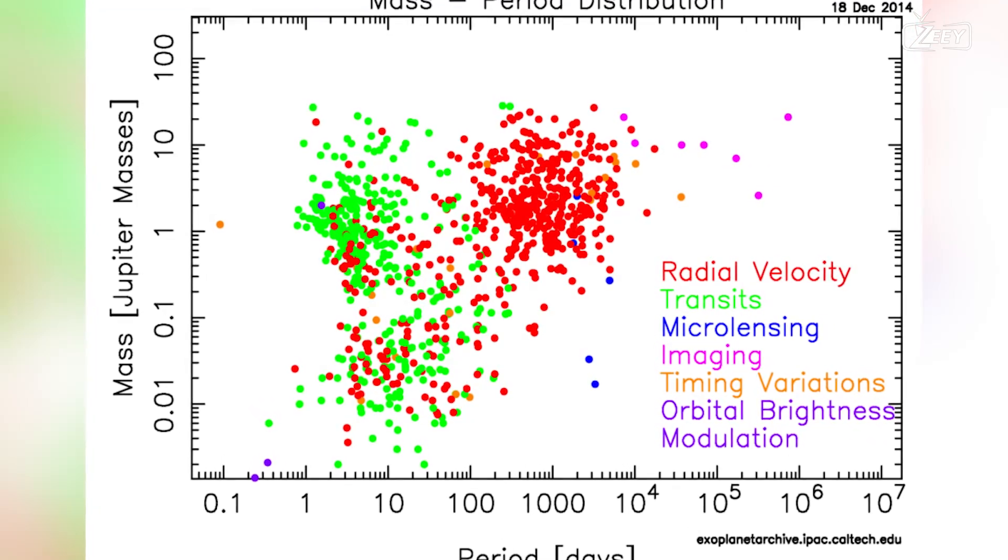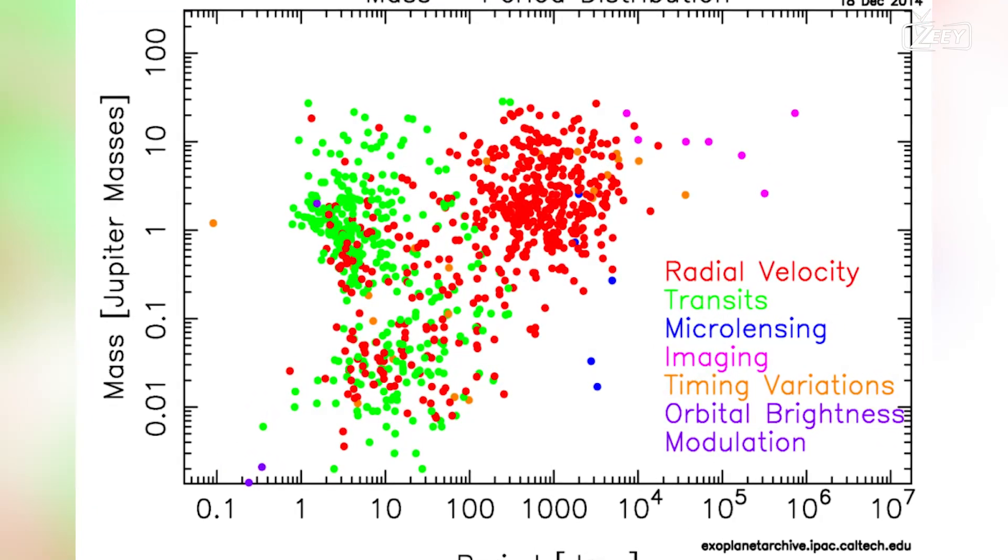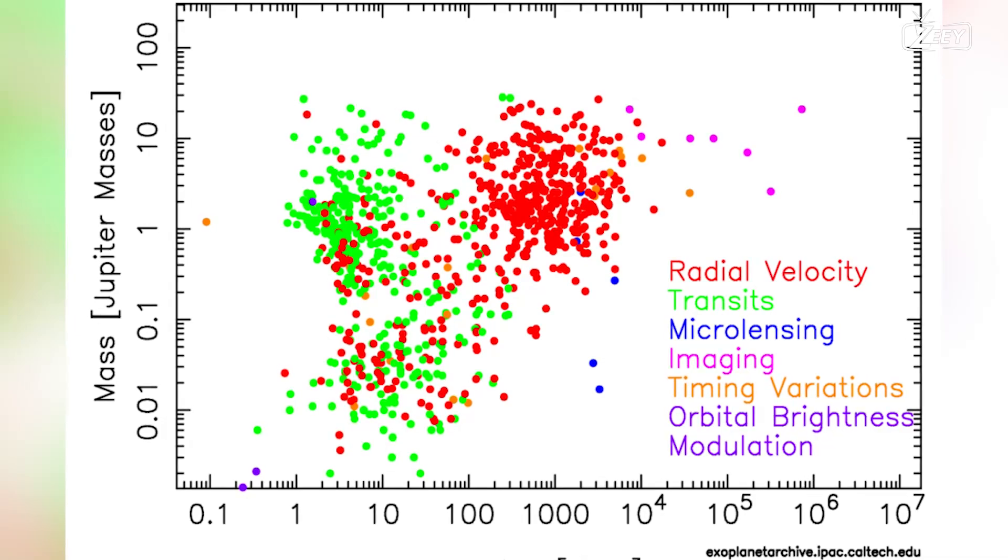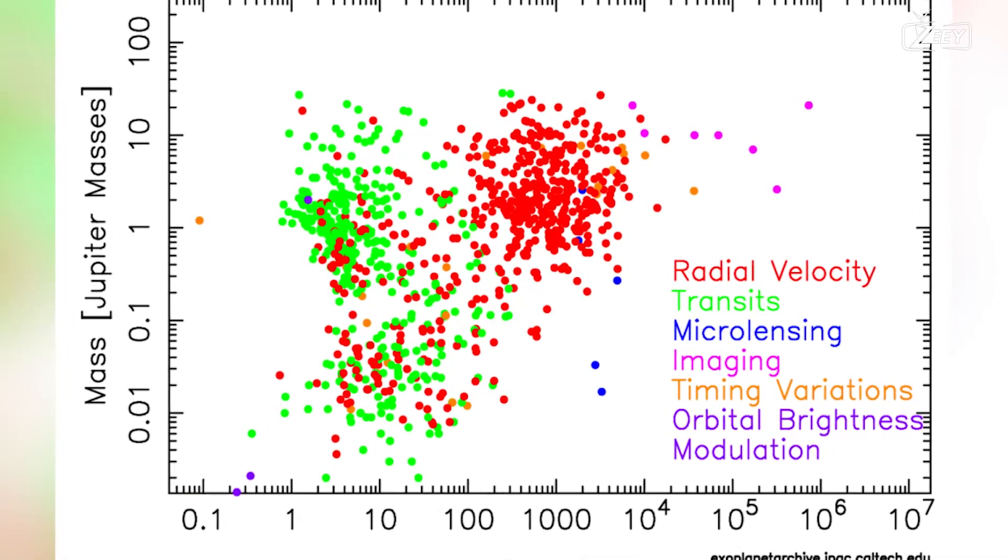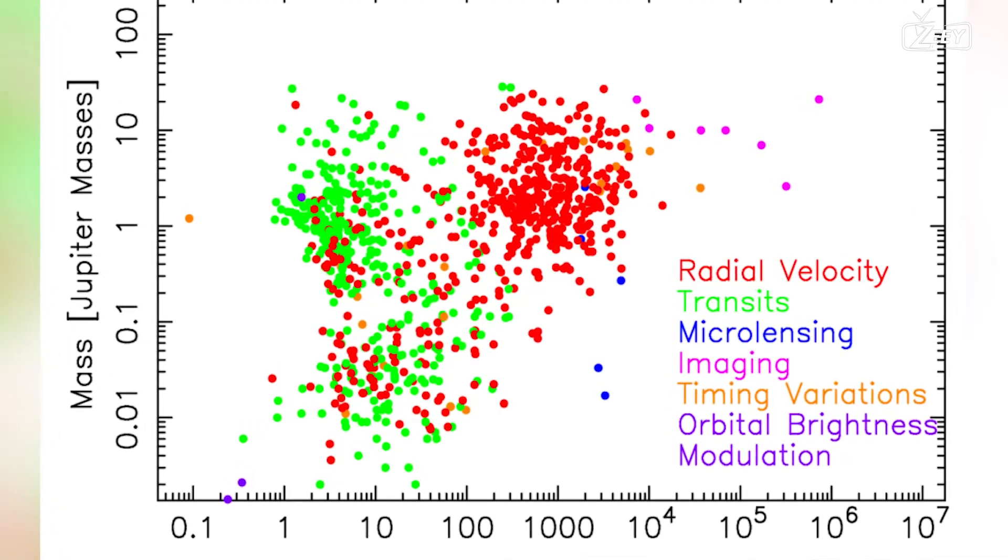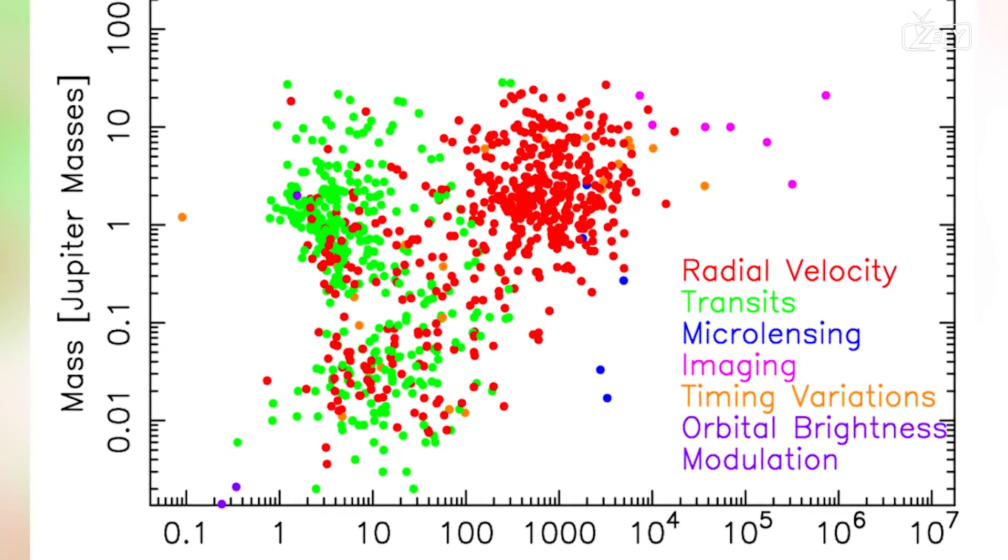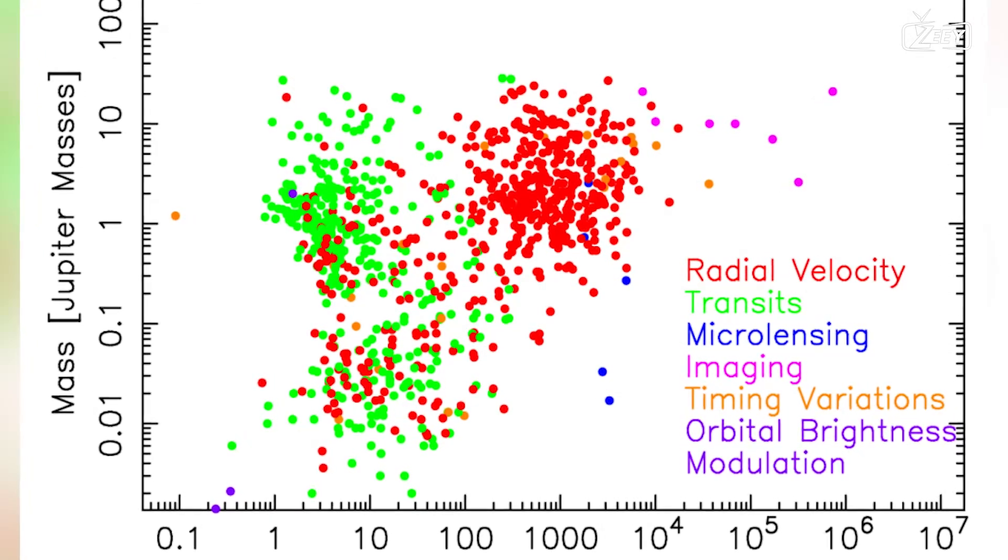On the x-axis, we have the planet's semi-major axis, which measures how far away it is from its star. This increases as we move from the origin to the right. On the y-axis, we have the planet's radius. The first transit was captured just three days after we declared the spacecraft operationally ready.